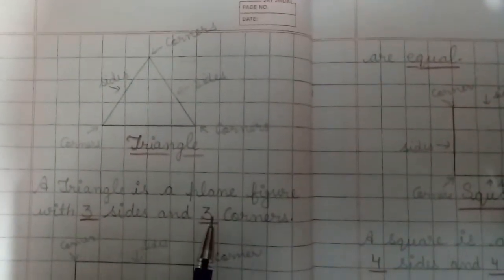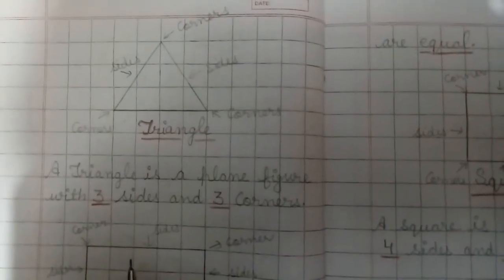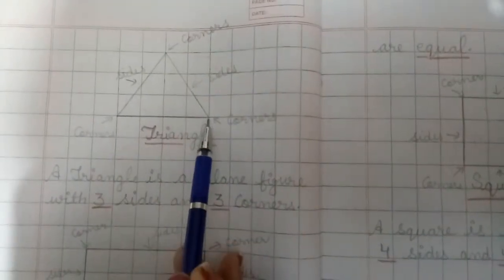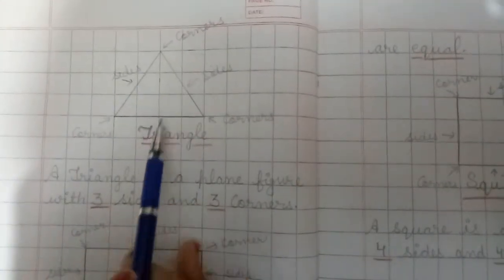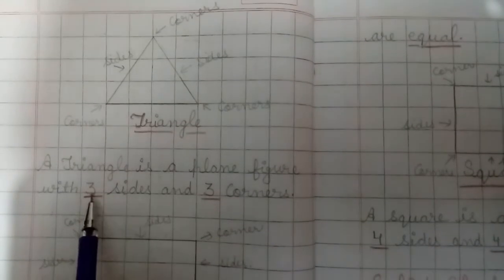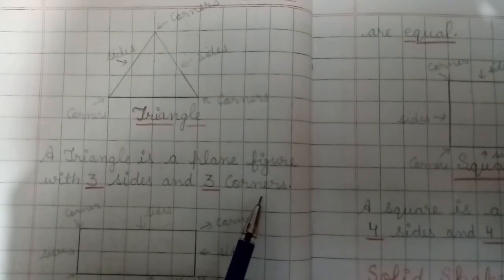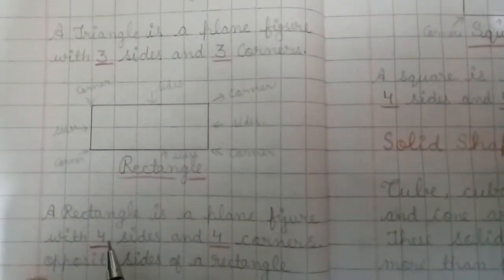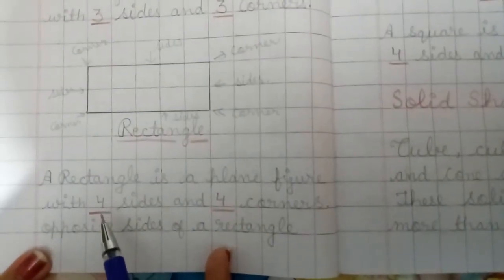A triangle is a plane figure. It has three sides and three corners. You can see: first corner, second corner — these are the corners, and these are the sides: one, two, three. So a triangle is a plane figure with three sides and three corners. Then another shape is rectangle — a rectangle is also a plane figure with four sides and four corners.